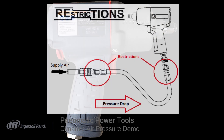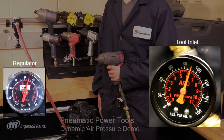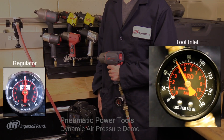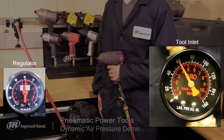As air moves through the system, internal friction from hoses and fittings will create a pressure difference between the regulator and the tool's inlet. With 90 psi at the regulator, the pressure at the tool drops to 60 psi while it is running.